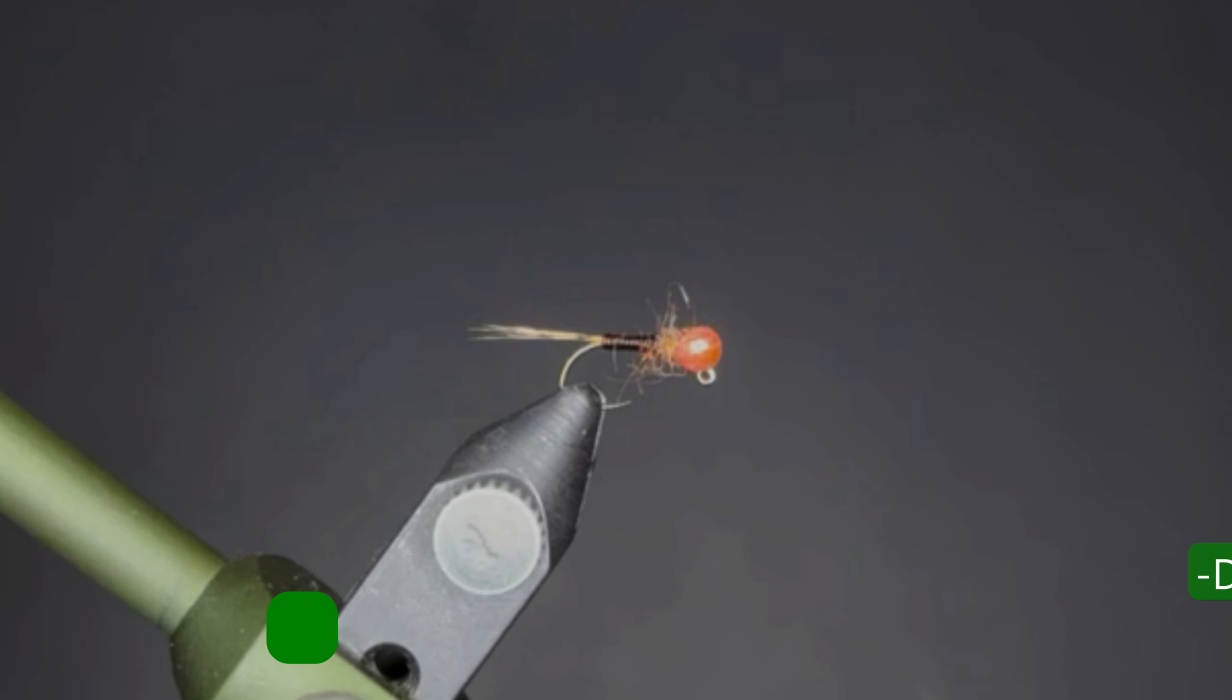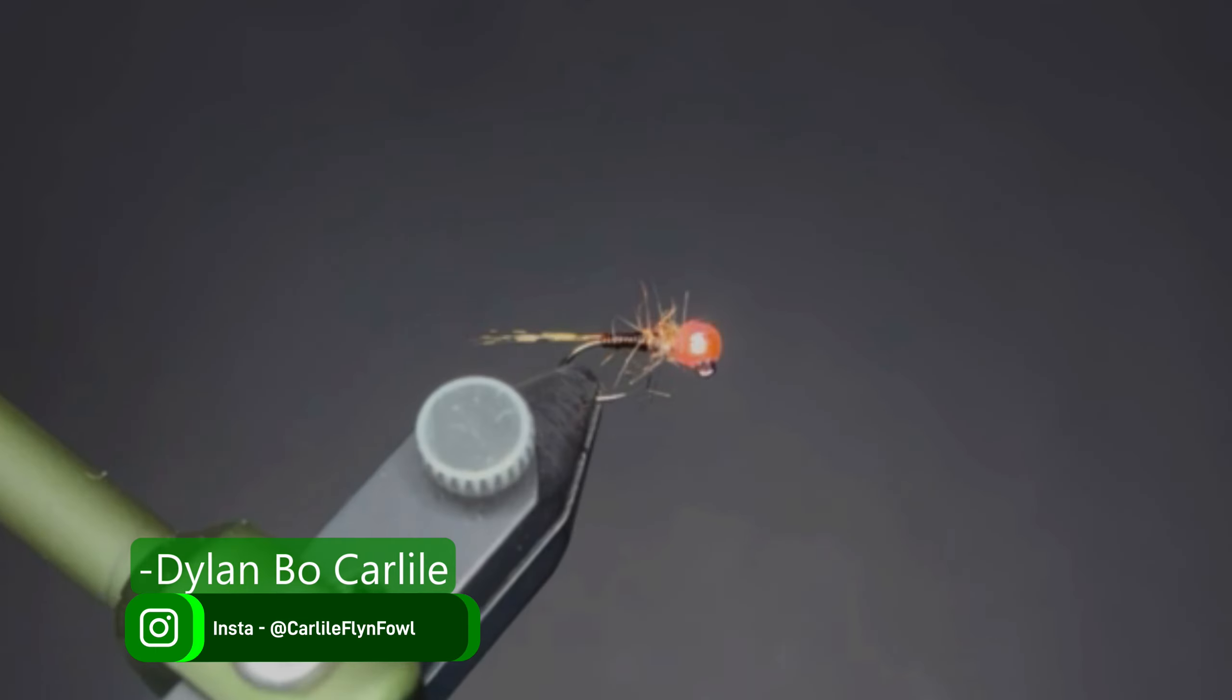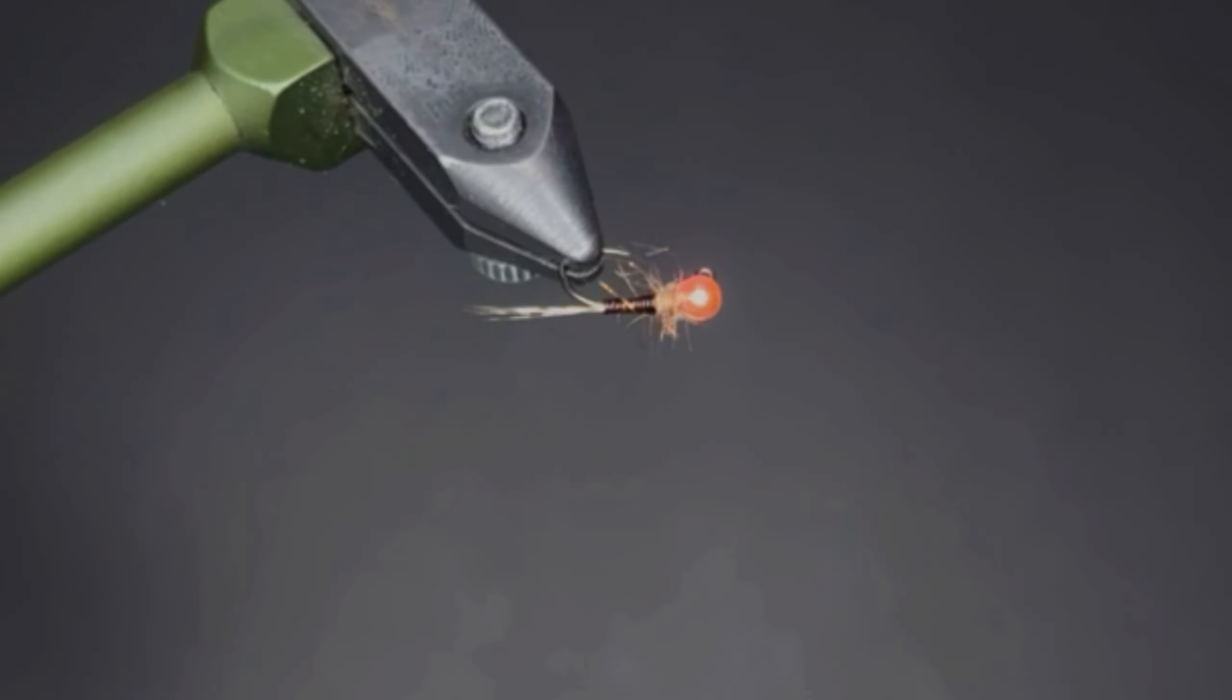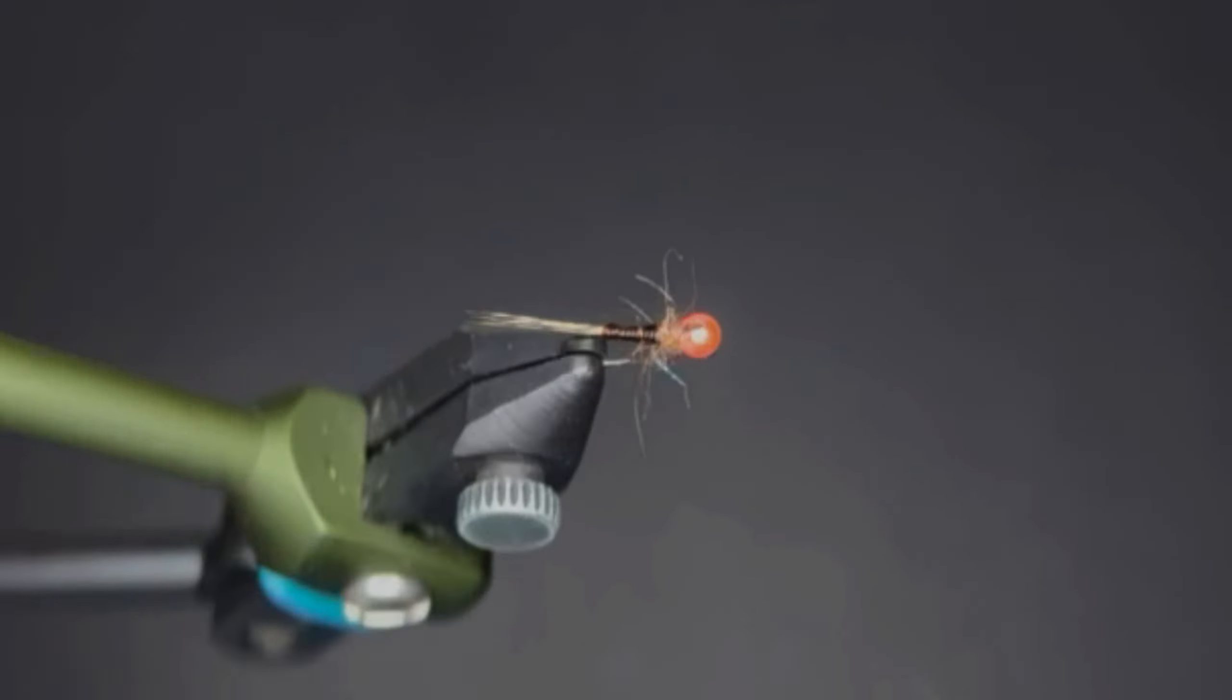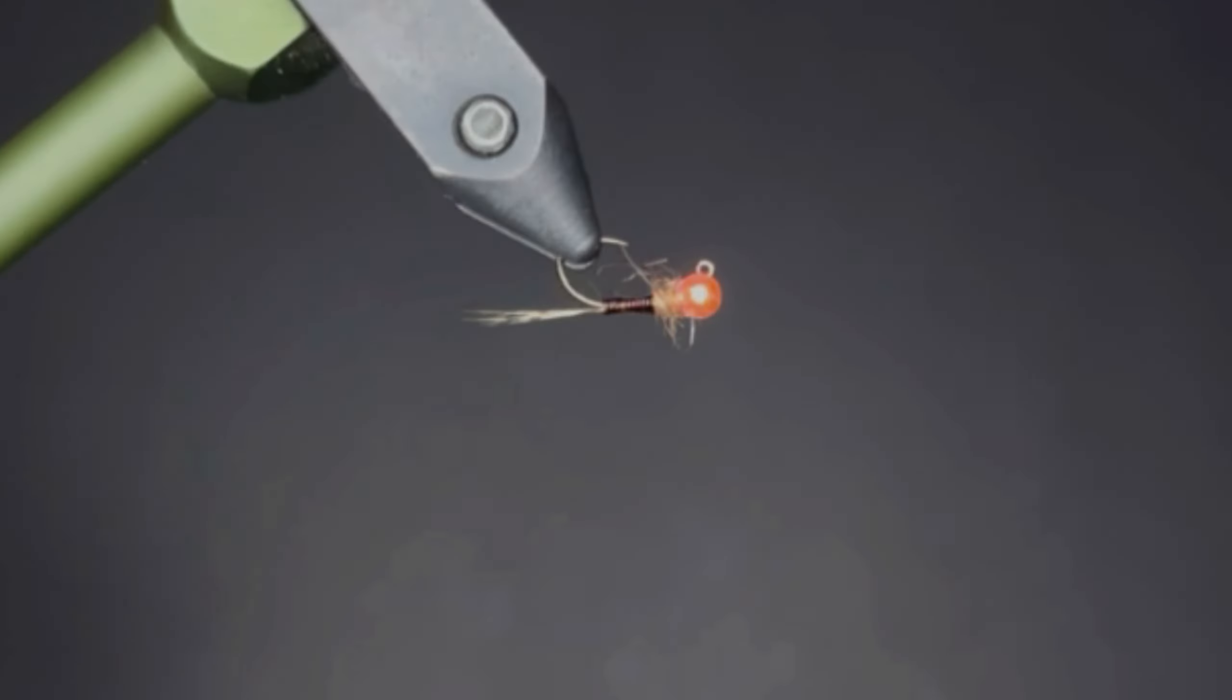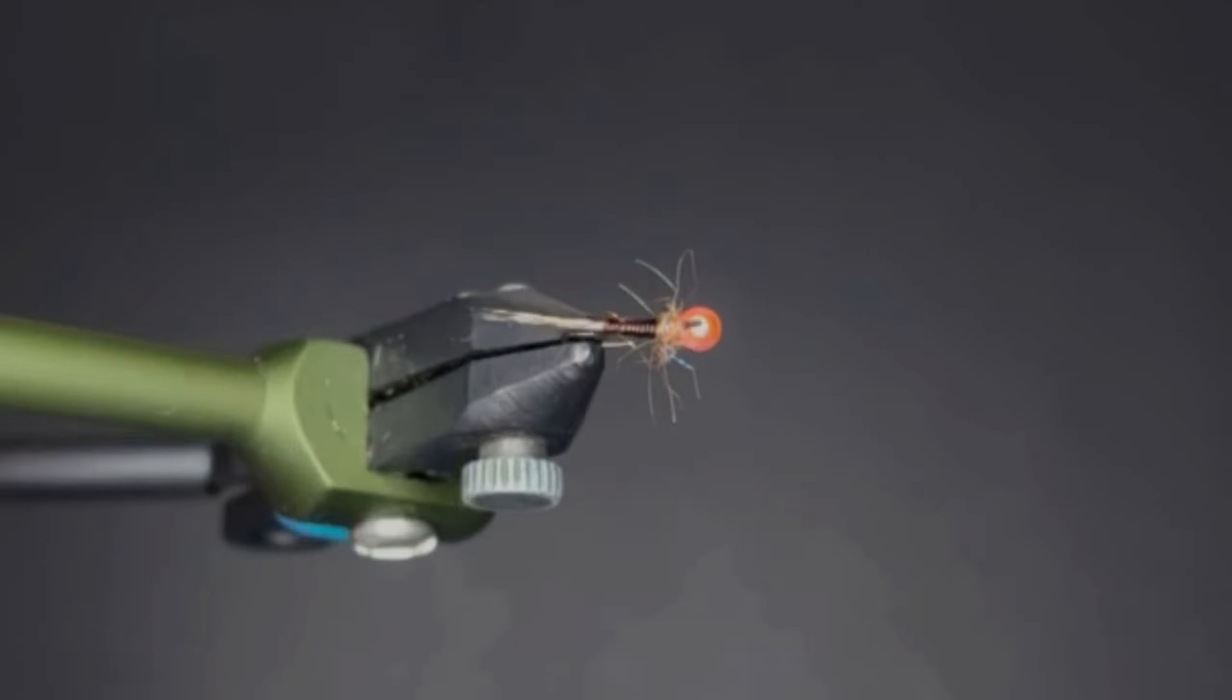All right guys, welcome back to another episode of Fly Tying Tuesdays here with Carvile Fly and Foul. Today we are tying a jig nymph called the France fly, a style of fly that utilizes micro stretch dubbing for the body.